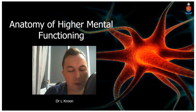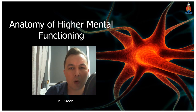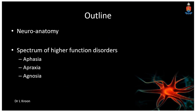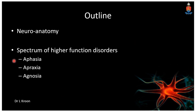We can refer to this as the primary dichotomy of cortical organization. This is a broad outline of the presentation: we're going to start off with the neuroanatomy, and then after that I'm going to look at the spectrum of higher functioning disorders. That's going to cover aphasias, apraxias, as well as agnosias.